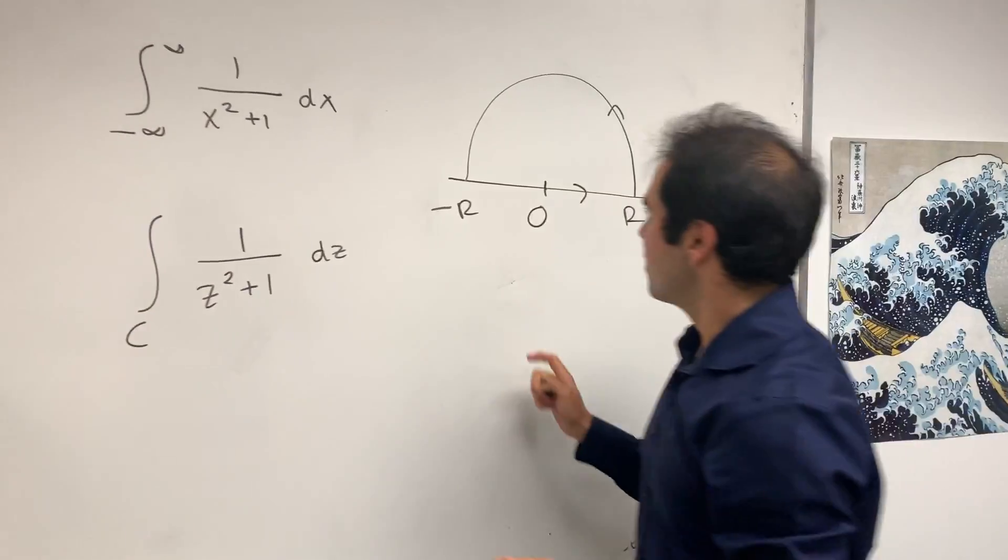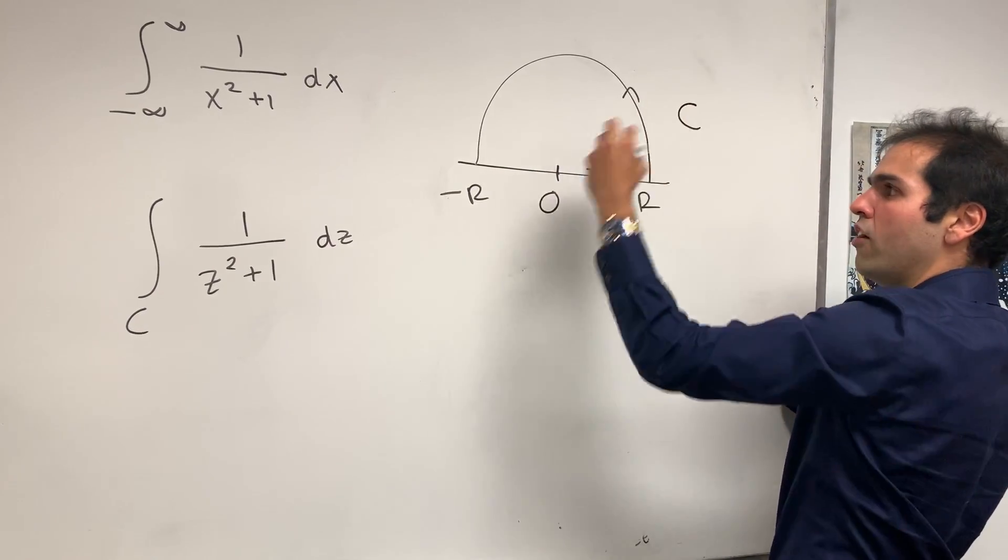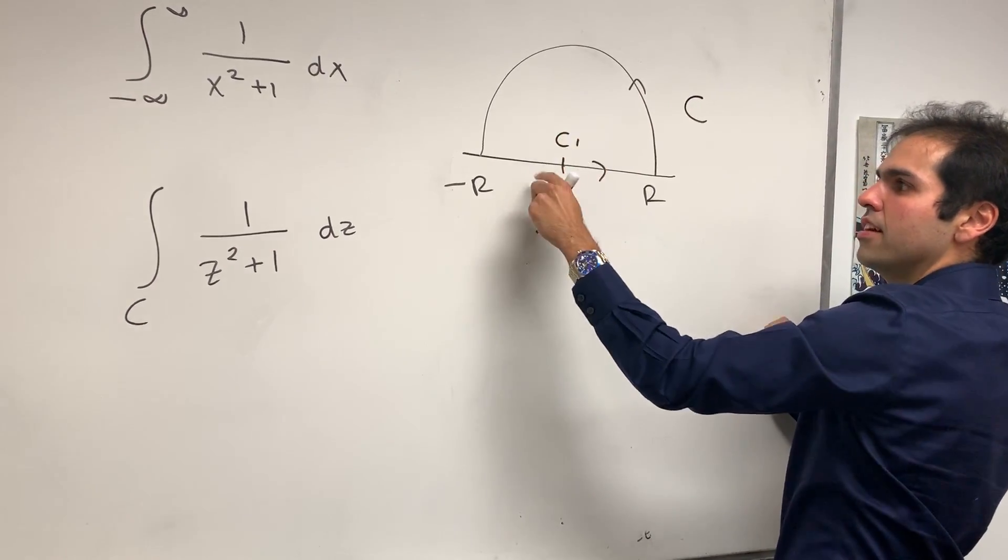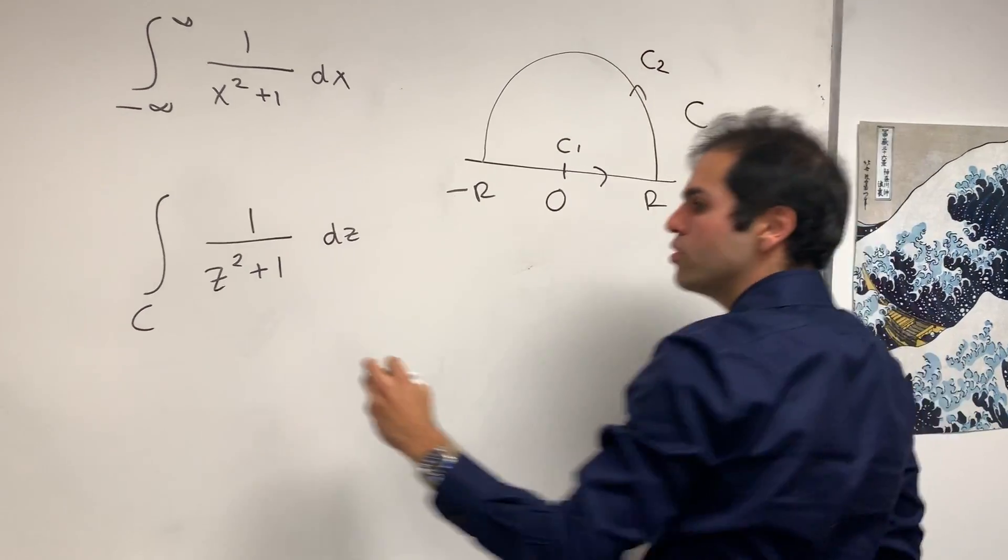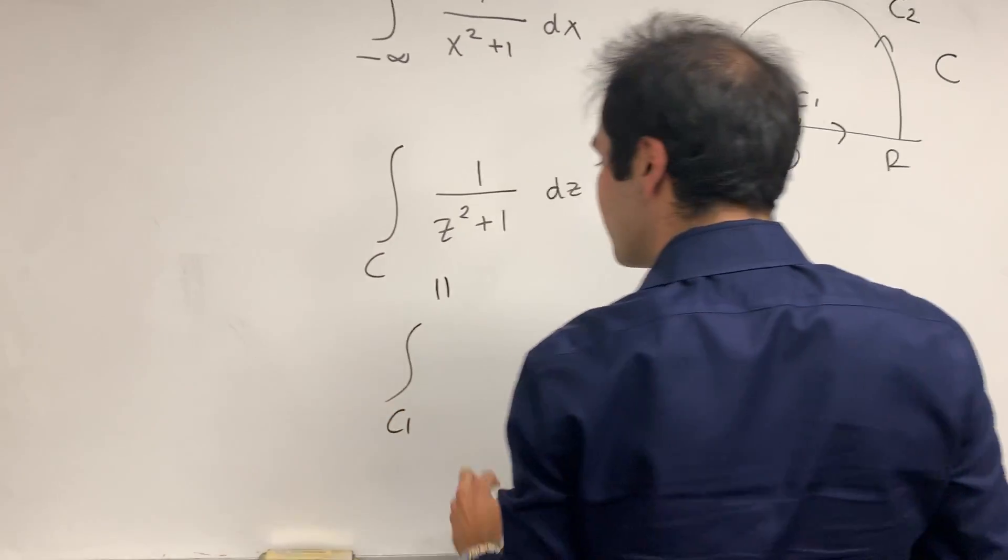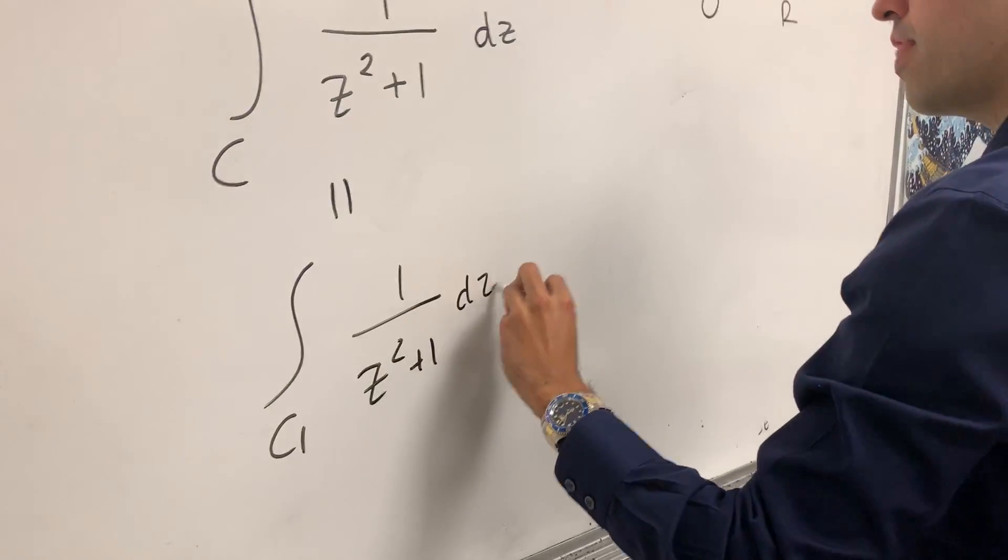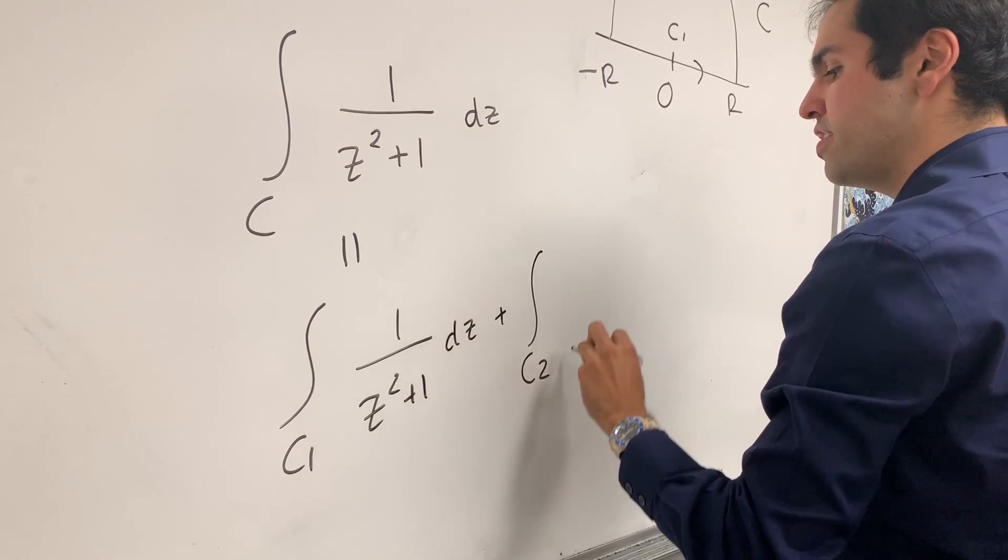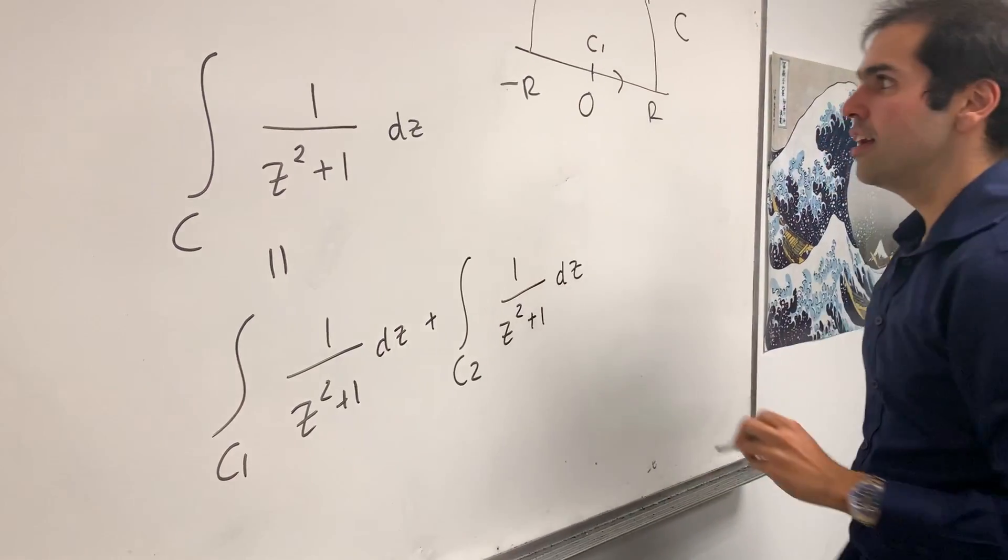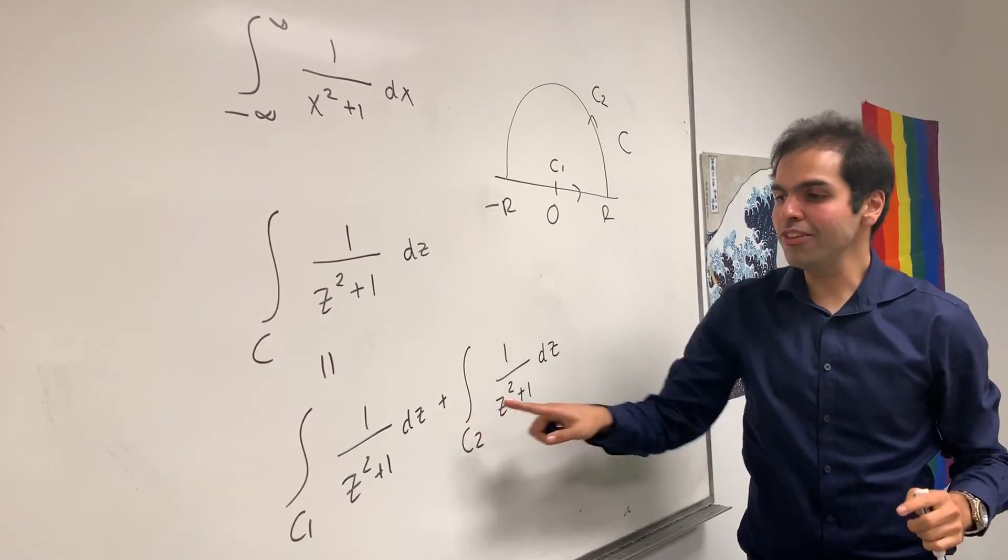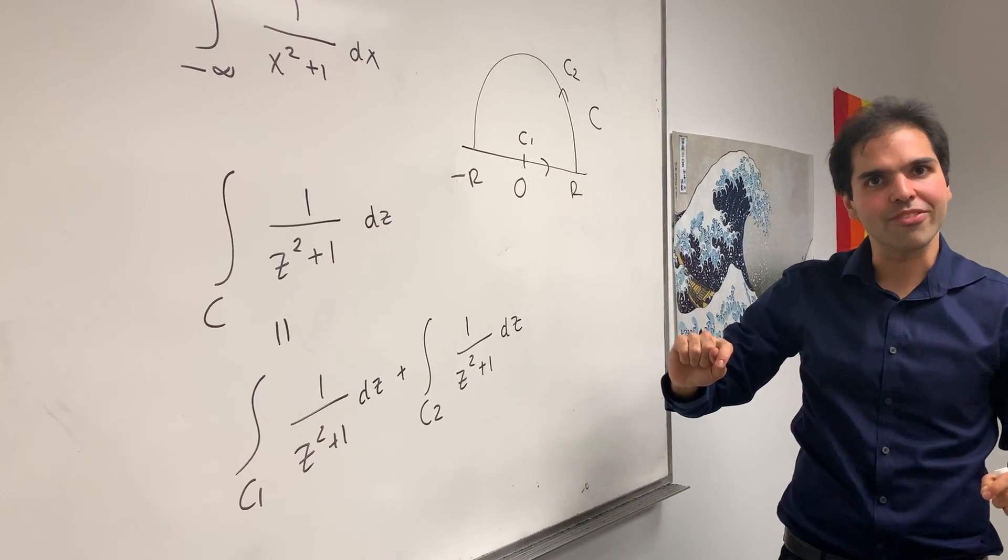Then, on the one hand, notice this integral is, like this curve itself is made out of two pieces. One, which is c1, and the other one, which is c2. So this integral is equal by linearity to the integral over c1 of 1 over z squared plus 1 dz, plus the integral over c2 of 1 over z squared plus 1 dz. And the point is we'll evaluate those two integrals, and we'll also evaluate this integral in a completely different way.